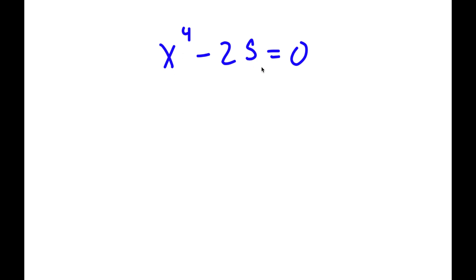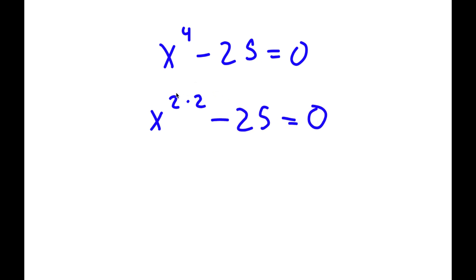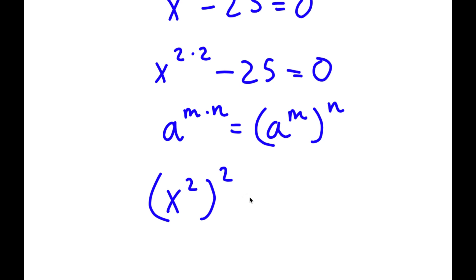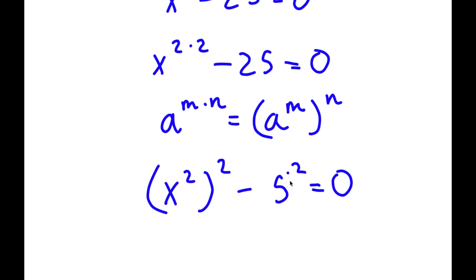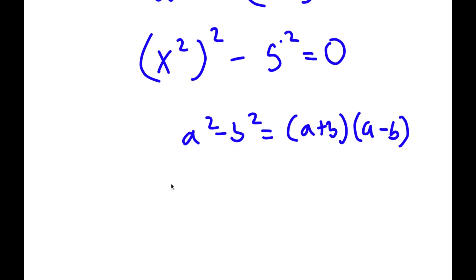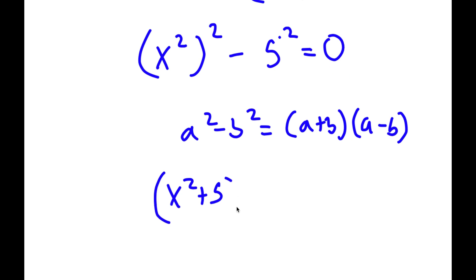In this problem, I have x to the power of 4 minus 25 is equal to 0. To solve this, I'm going to first rewrite x to the power of 4 as x to the power of 2 times 2. Now, if I have something in the form a to the power of m times n, this equals a to the power of m to the power of n. So x to the power of 2 times 2 becomes x squared to the power of 2, and 25 I can write as 5 squared. Now, using the difference of squares — a squared minus b squared equals a plus b times a minus b — this becomes x squared plus 5 times x squared minus 5, which equals 0.